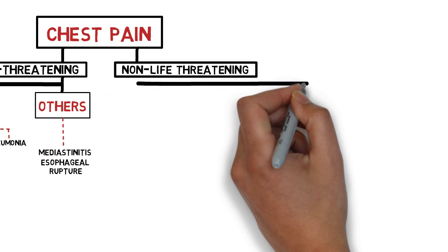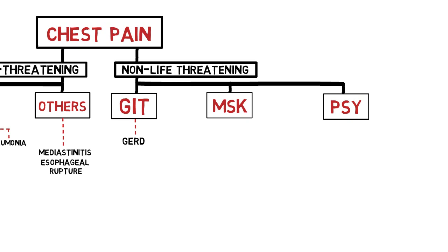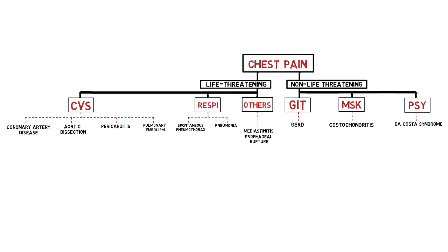For non-life-threatening causes, I have selected three systems in particular: gastrointestinal, musculoskeletal, and psychological. We have gastroesophageal reflux disease, costochondritis, and Da Costa syndrome. We are not going to talk about pneumonia, because it is best we cover that topic along with other diseases associated with shortness of breath, as that is the primary complaint. Mediastinitis and esophageal rupture are also excluded as these are less common.